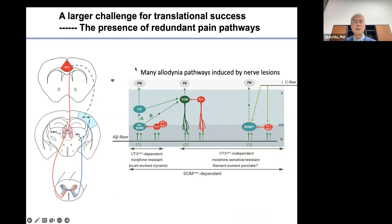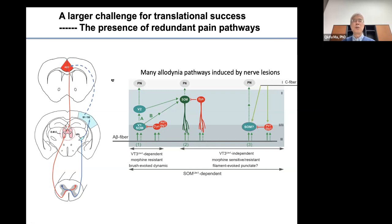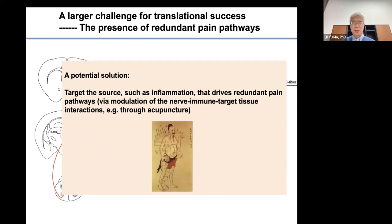Another — probably even larger — challenge for future translational success is the problem of redundancy: the presence of redundant pain pathways. As we study the spinal cord, we realize that so many pathways can drive pain. Even with medial-lateral segregation in acute conditions, in chronic conditions the lateral pathway can also converge. Even targeting a convergent region like the ACC, the redundancy is a real challenge, meaning that single molecule targeting has so far not been very successful. One of my motivations for studying acupuncture these last six or seven years is to try to overcome this redundancy by addressing the root of the disease — the inflammation driving those redundant pathways — rather than just blocking pain pathways.